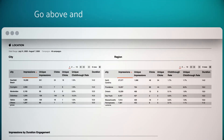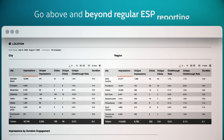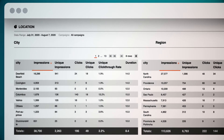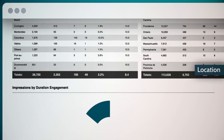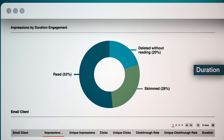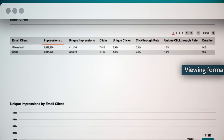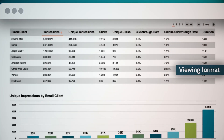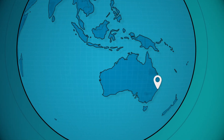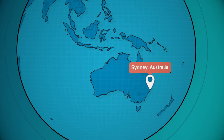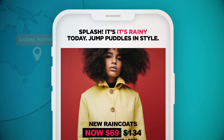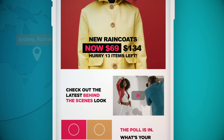Go above and beyond regular ESP reporting and learn your opener's location, duration of open, and their viewing format. New location or a different device? They'll see a new email each time.